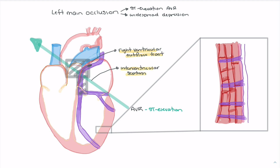We also see ST depression in our inferior leads. The inferior leads — 2, 3, and AVF — look at the reciprocal portion of the heart relative to AVR. So these leads see the reciprocal changes we would expect when we have ischemia or necrosis in the right ventricular outflow tract and the intraventricular septum. As a result, we expect to see reciprocal ST depression in our inferior leads because of the elevation we see in AVR.